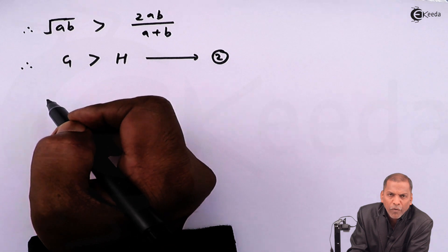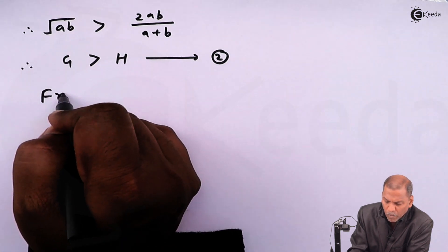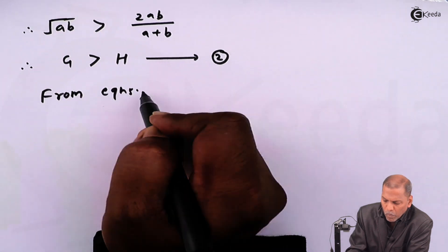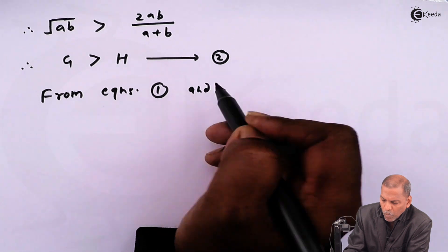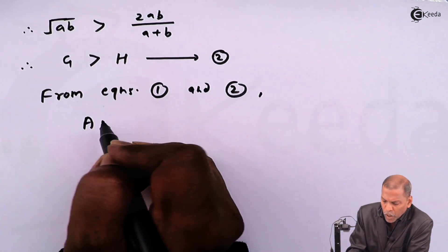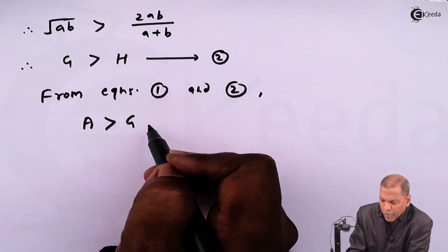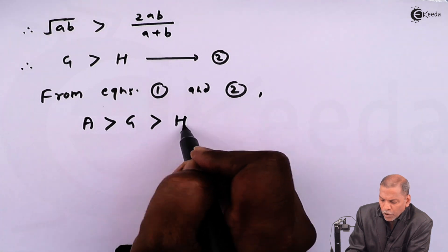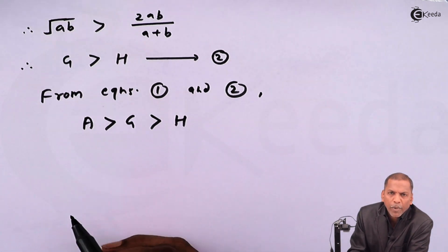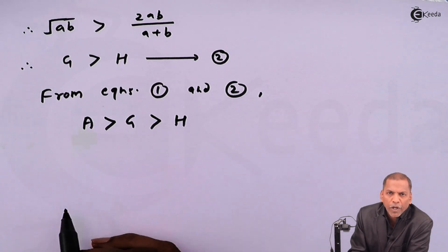Then from equation 1 and 2, we conclude that arithmetic mean is greater than geometric mean and geometric mean is greater than harmonic mean. In this way, we prove the first part of the theorem.